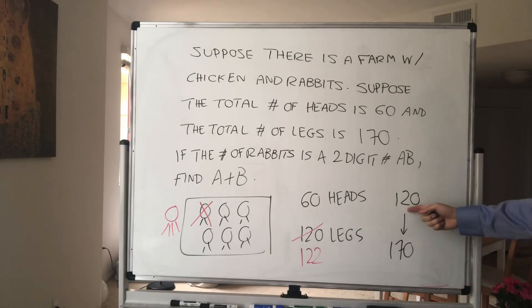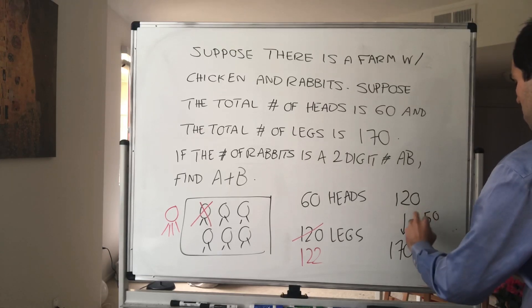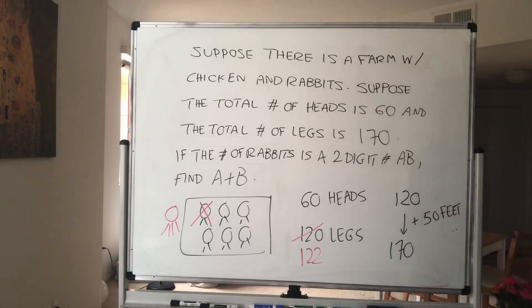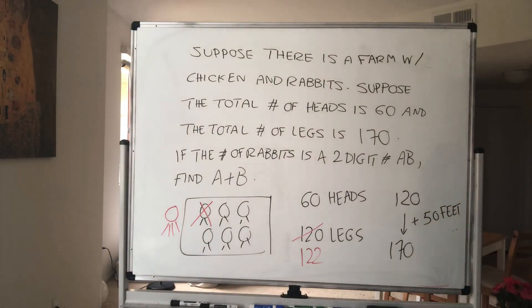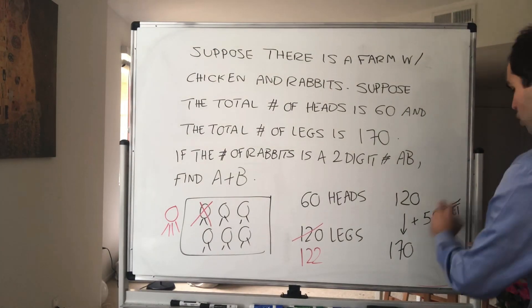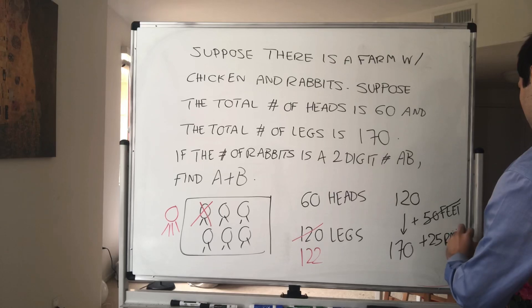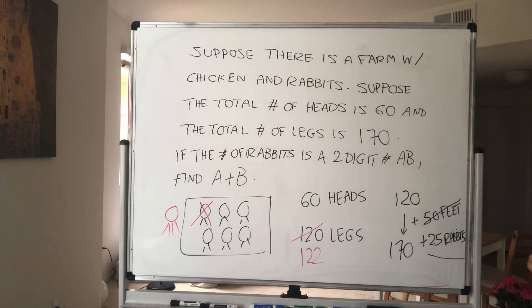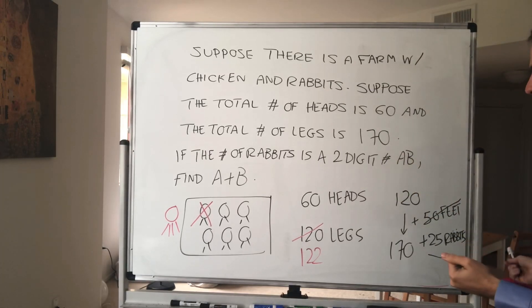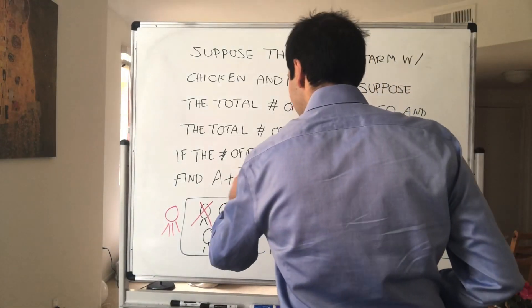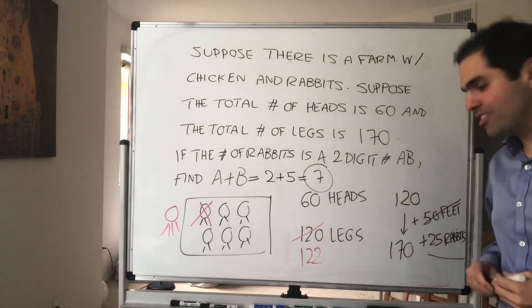Notice that you have to add 50 feet. And remember, for every rabbit you gain two feet. So to gain 50 feet, you need to add 25 rabbits. The answer AB is 25, and therefore A plus B is just 2 plus 5, which is 7. So the answer to this problem is 7.